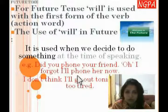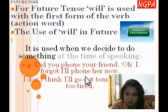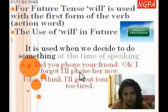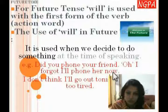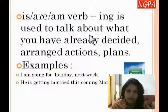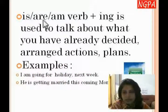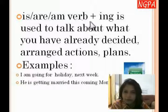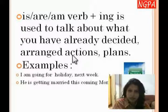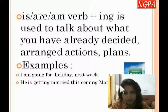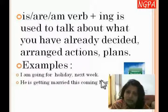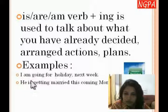This shows that you are using 'will' just to talk about an action that you have decided to do right now — 'I'll do it.' We also have to focus on one more thing: is/are/am plus verb plus -ing. For example, 'I'm going somewhere tomorrow,' 'I'm going for holiday next week.' This structure is the structure of present continuous tense.